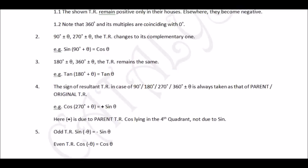Rule 5 involves odd and even functions. sine(−θ) = −sine θ, since sine is an odd function. And cos(−θ) = cos θ, since cosine is an even function. We will study these in more detail later in the course.